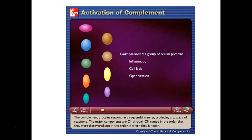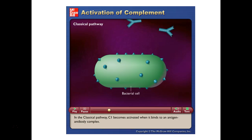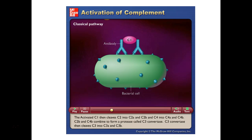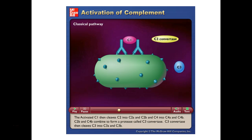The major components are C1 through C9, named in the order they were discovered — not the order in which they function. The complement cascade can be activated by the classical pathway or the alternative pathway. In the classical pathway, C1 becomes activated when it binds to an antigen-antibody complex. Activated C1 then cleaves C2 into C2A and C2B, and C4 into C4A and C4B. C2B and C4B combine to form a protease called C3-convertase, which cleaves C3 into C3A and C3B.